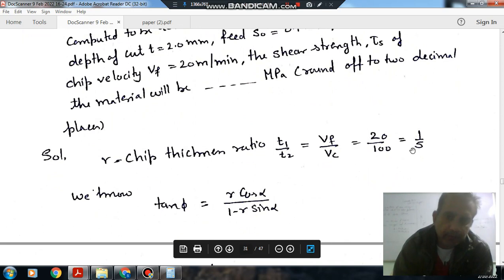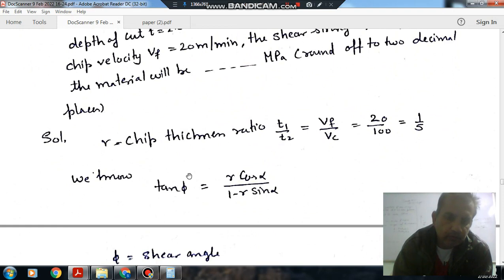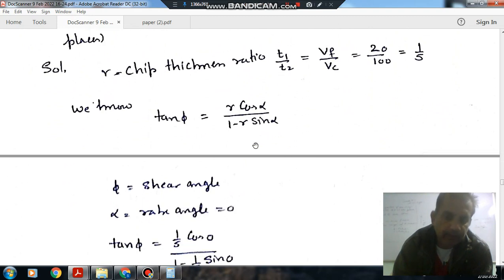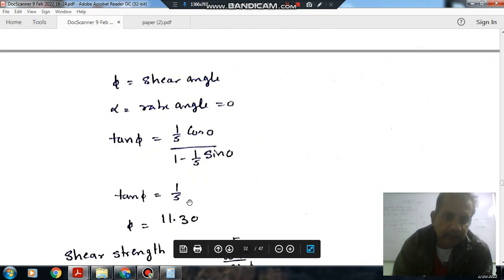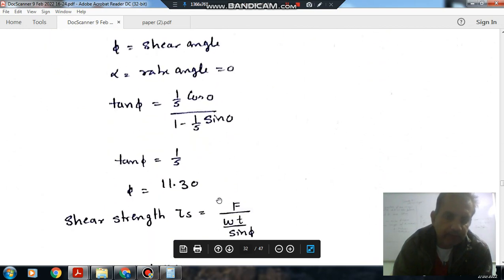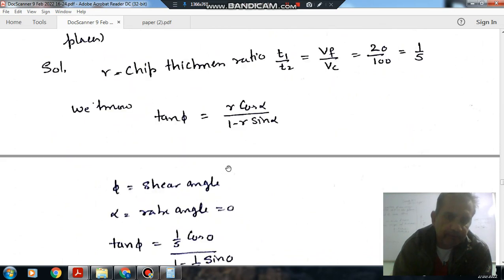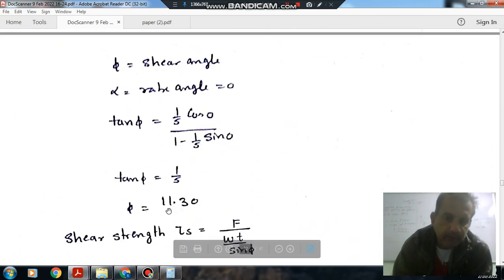Now we have rake angle as 0. So tangent phi is your R divided by 1 minus R cos alpha. R is your 1 by 5 and alpha is your 0. So tangent phi is your 1 by 5, so phi is your 11.3 degrees. We have to calculate shear strength.